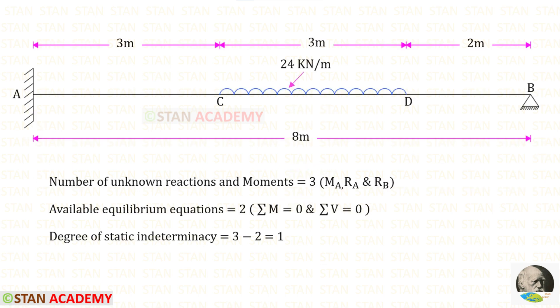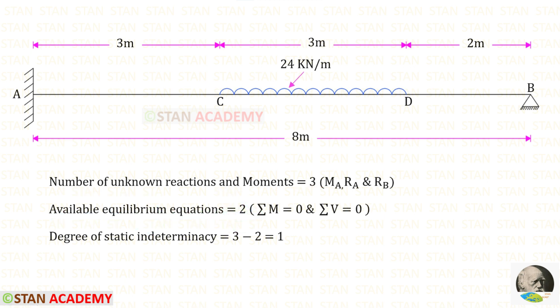Now let us find the degree of static indeterminacy. In this beam, the number of unknown reactions and moments are 3. The available equilibrium equations are 2. The degree of static indeterminacy will be 3 minus 2, so we get 1.